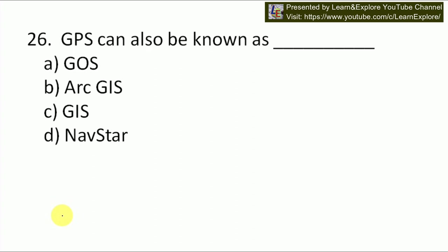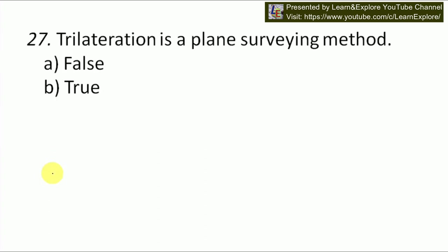Next question: GPS can also be known as GOS, ArcGIS, GIS, or Napster. Our answer will be D — GPS or Global Positioning System can also be known as Napster. Next question: trilateration is the basic surveying method — true or false. It is definitely true because trilateration is the basic principle involved in GPS systems, originally used in basic surveying where the calculation involves mathematical operations. Our answer will be B — true.